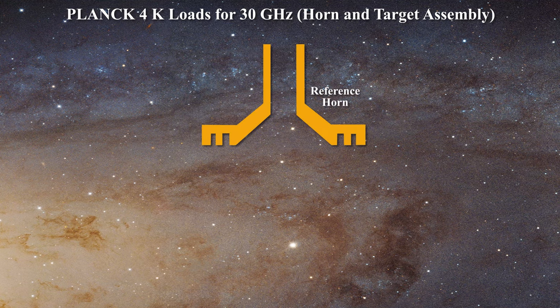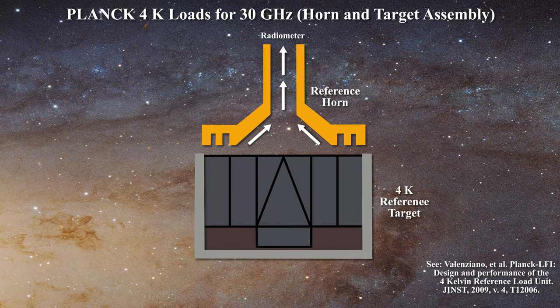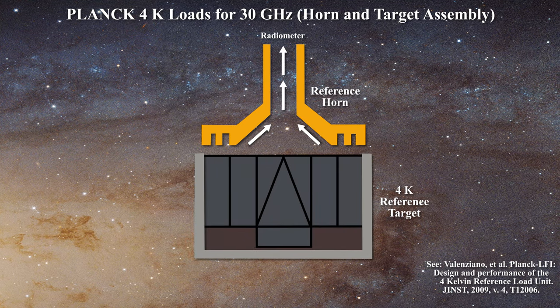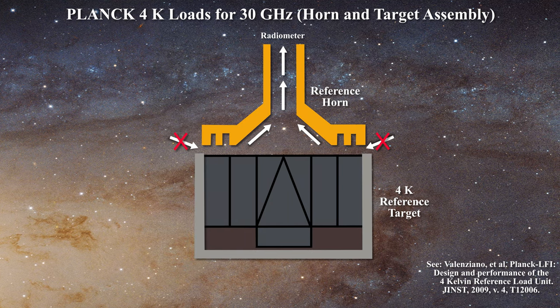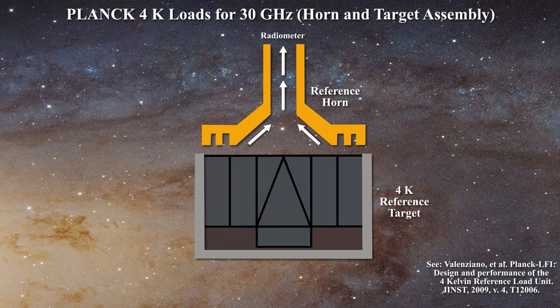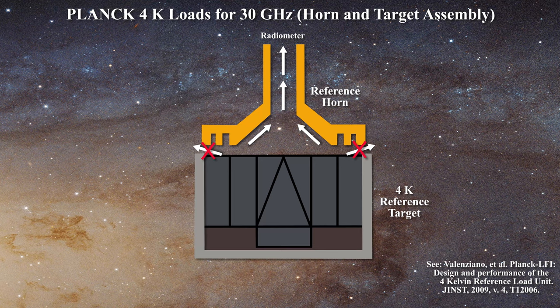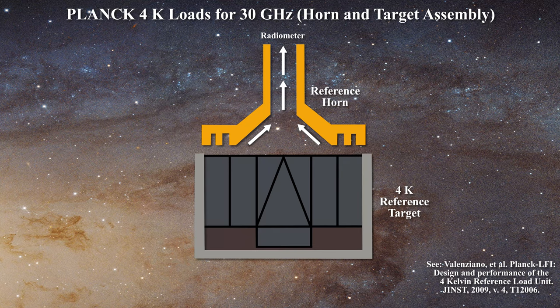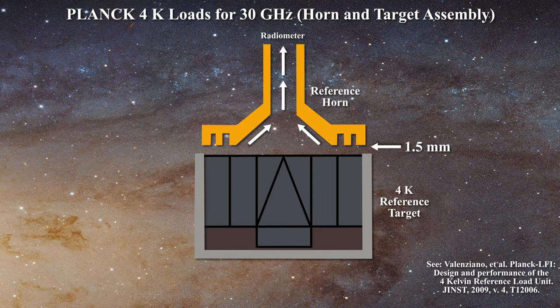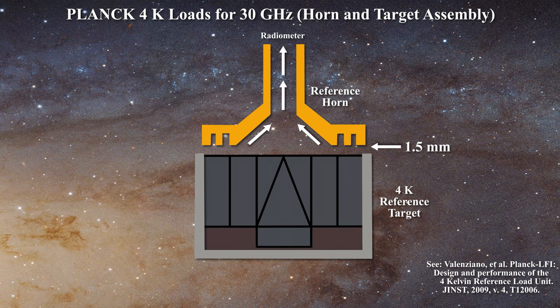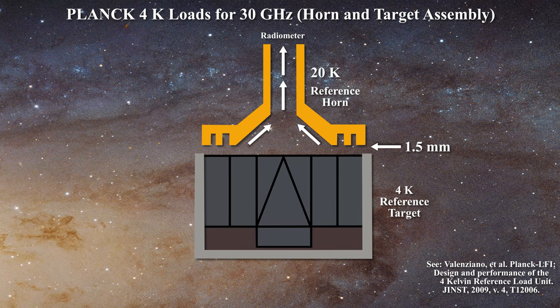First, a small microwave horn is designed to bring the 4K reference signal to the radiometer. It is critical that this horn not allow microwave signals from entering the radiometer which were not produced by the 4K target. The target signal must also not escape without entering the horn. Yet the microwave horn is physically separated from the blackbody by a distance of about 1.5 mm. This separation helps ensure thermal isolation between the horn at approximately 20K and the reference load at 4K.